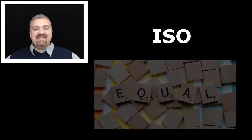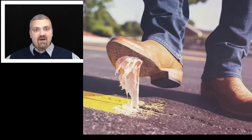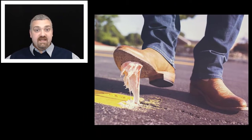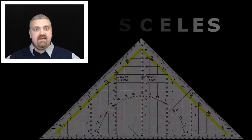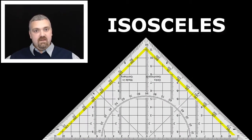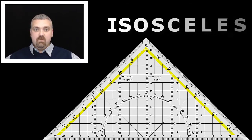Next we have 'iso,' which means equal. Whenever possible, I try to give you an example from outside of medical terminology to really help these terms and ideas stick to your gray matter. Think isosceles triangle — an isosceles triangle has two or more equal sides. Iso means equal.